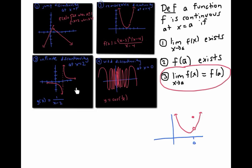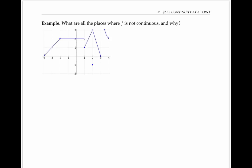For example, in our third example, the function can't be continuous at x equals two, because it fails to have a limit at x equals two, and it fails to have a value at x equals two. In our wild discontinuity example, the limit also fails to exist at x equals zero, so the function can't be continuous there. So what are all the places where this function f is not continuous, and why? Please take a moment to think about it for yourself.